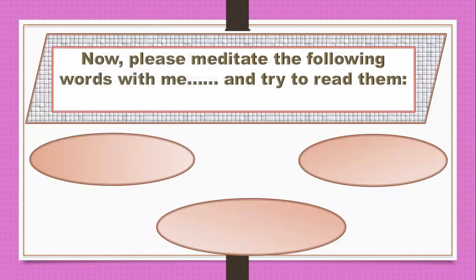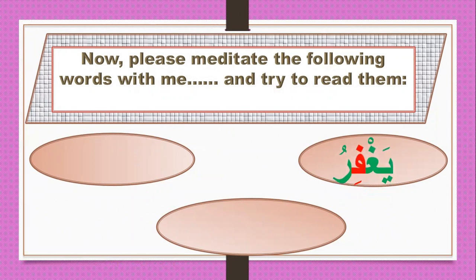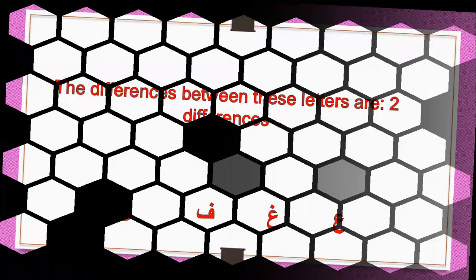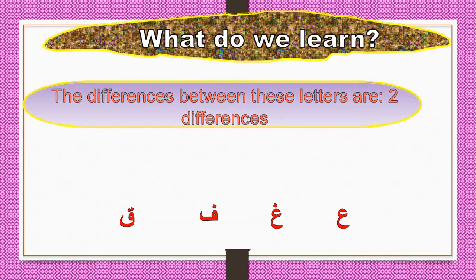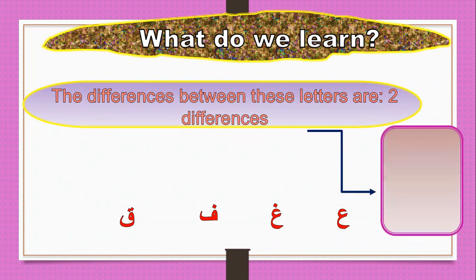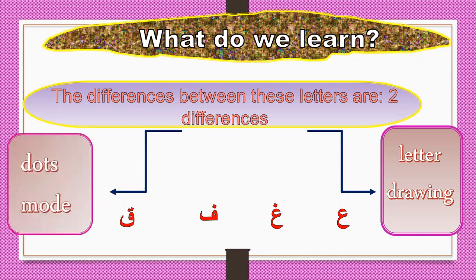Now please meditate the following words with me and try to read them. What is the word? Yes. What is this word? Ta'alu. What is this word? Fa'qul. What do we learn? The difference between these letters is two differences. The first difference is letter drawing: Ayn and Ghayn have the same drawing; Fa and Qaaf have the same drawing. Number two is dots: Ghayn has one dot, Fa has one dot, and Qaaf has two dots.